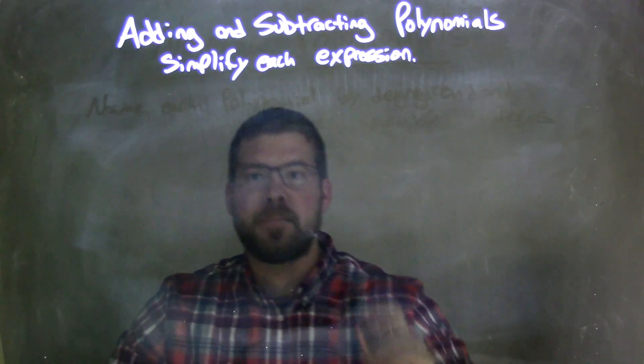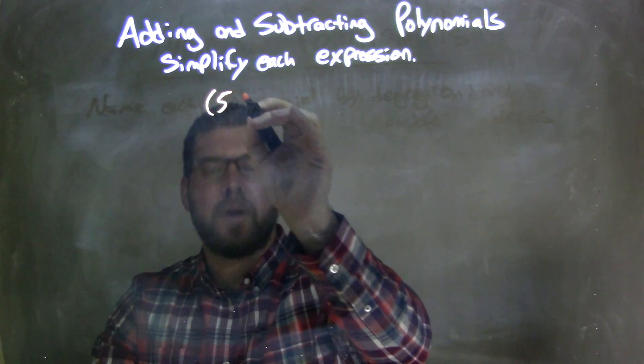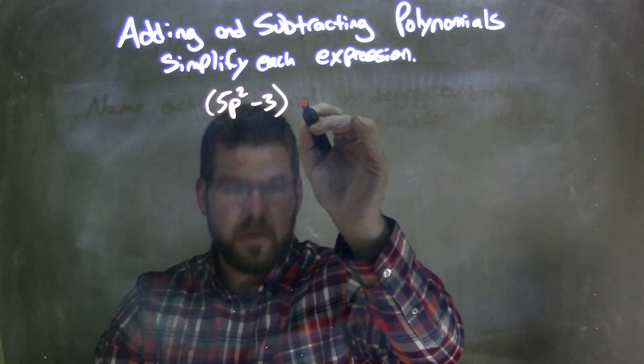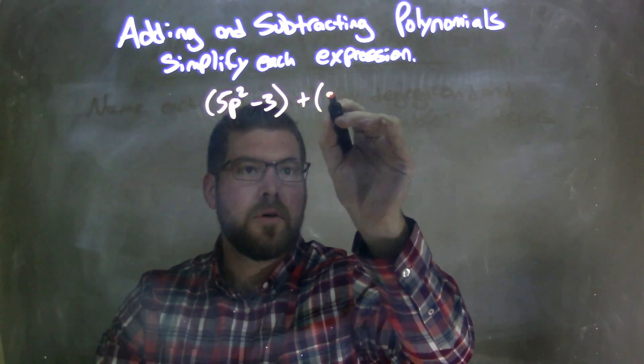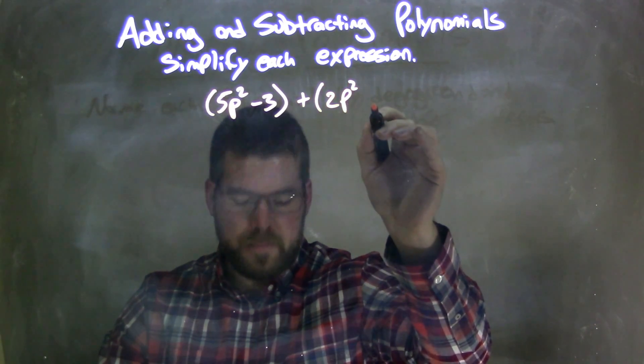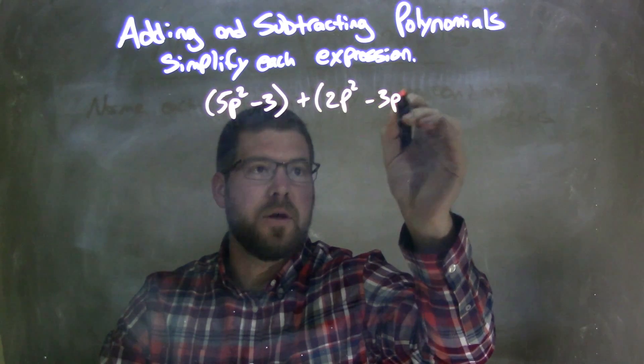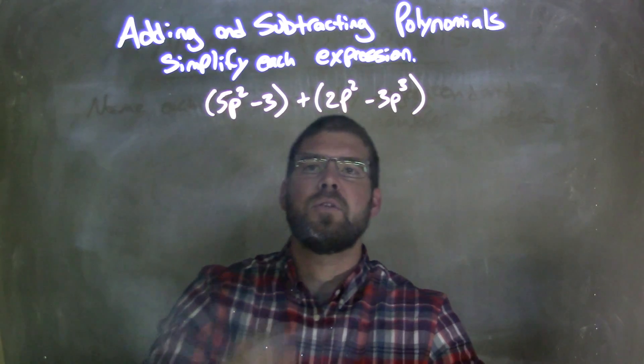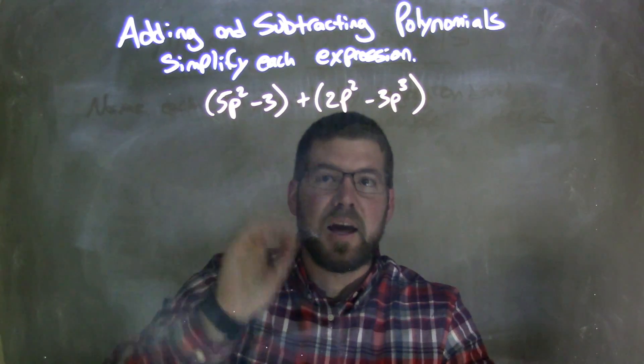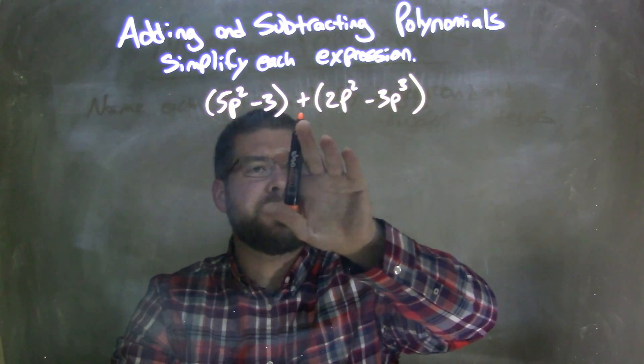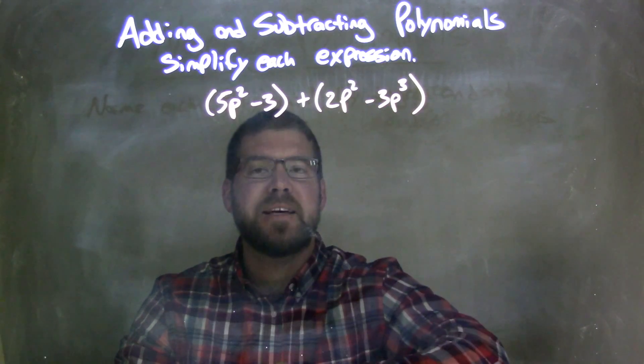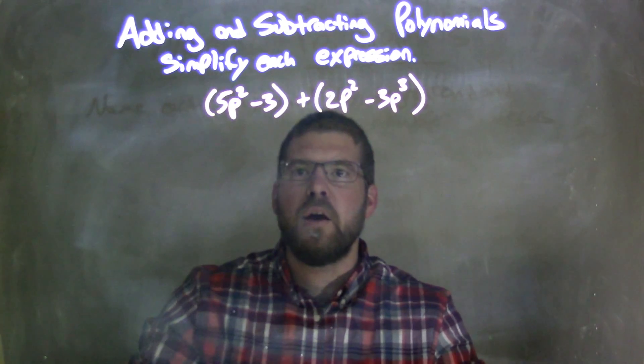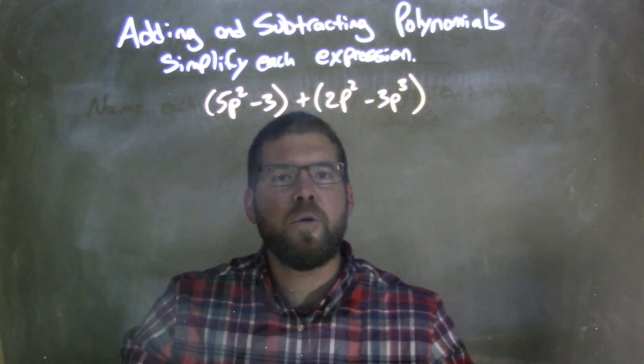So if I was given this expression, 5p squared minus 3 plus parentheses 2p squared minus 3p to the third. Well, first thing I look, it's separated by parentheses. Does this plus sign change anything? No, it doesn't. We're adding both of these together. We're trying to combine them all together. Inside these parentheses, there's no simplification. So now I'm going to move on without the parentheses.